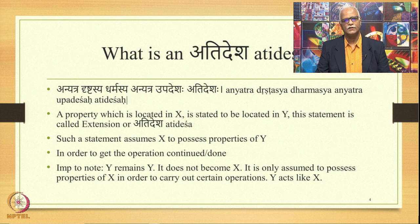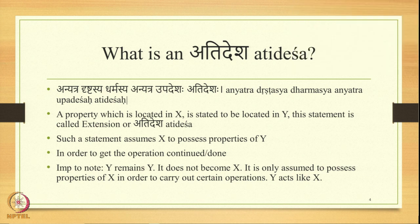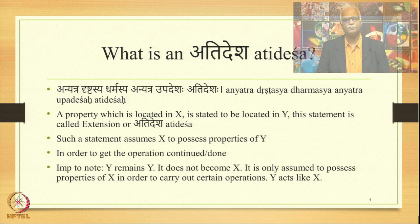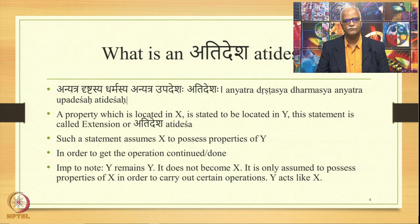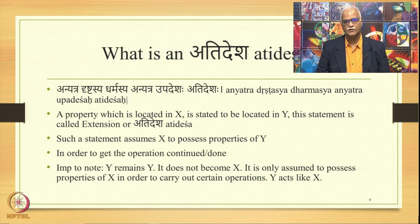Now we come to Atidesha. So what is Atidesha? The definition given in the tradition is: anyatra drishtasya dharmasya anyatra upadesha — Atidesha. A property which is located somewhere gets stated to be the property of something else in which that property does not exist. This way of stating the property is called Atidesha. So a property located in X is stated to be located in Y where it is actually not located. Such a statement is called an extension statement or Atidesha sutra.